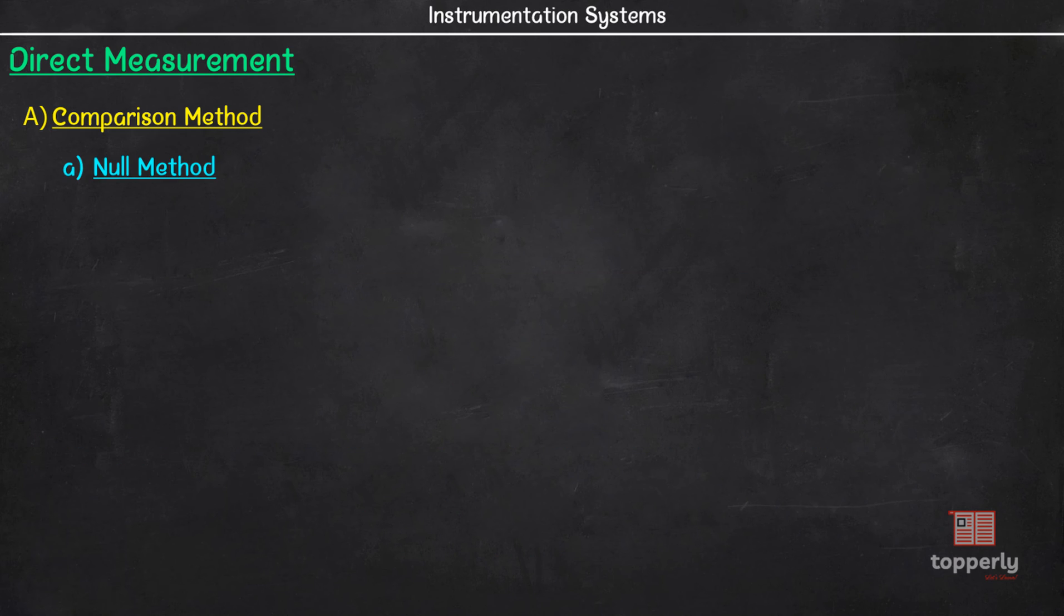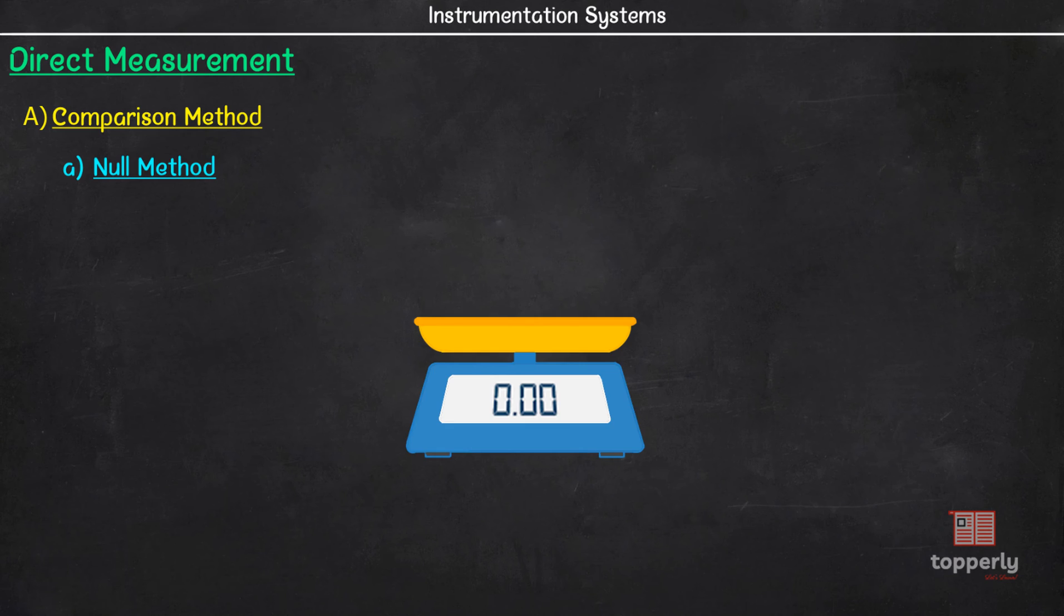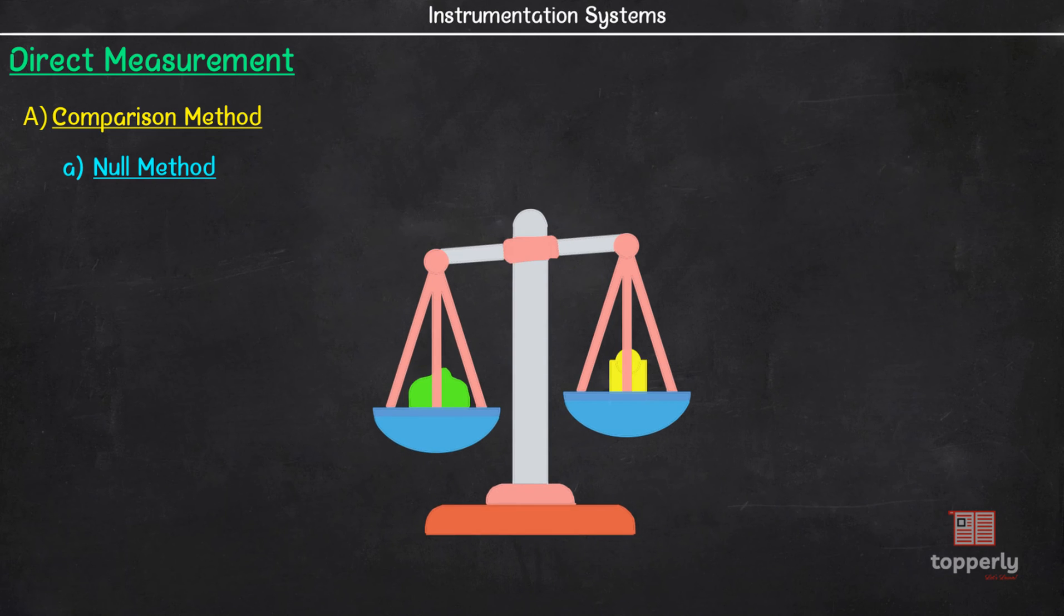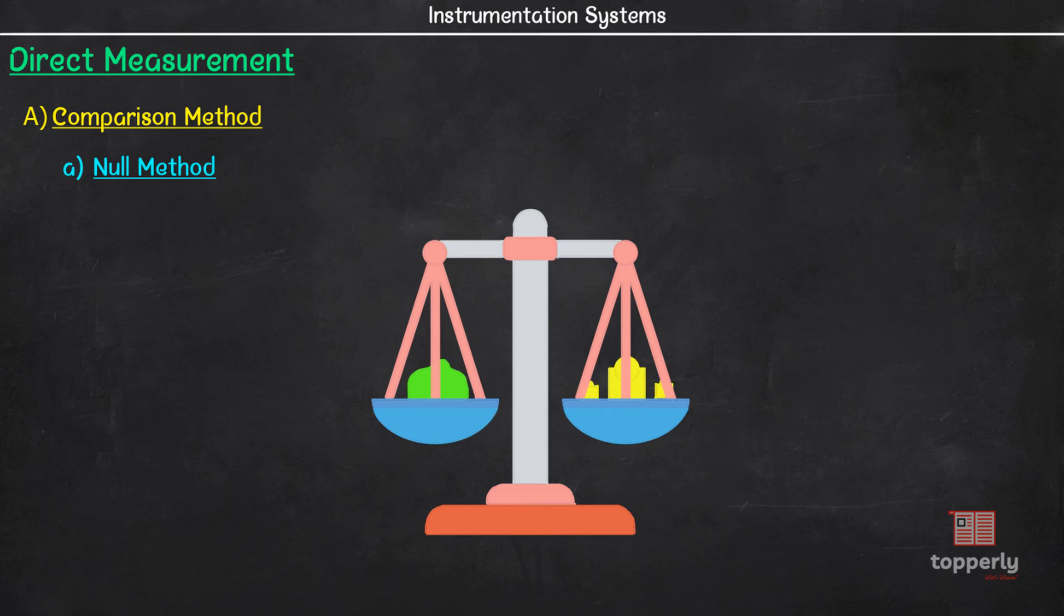An example of a null method of measurement is a weighing scale. Here, at one end we place the unknown weight and on the other end we keep on adding weights until the standard weights nullify the effect of unknown weight and thus the weight of the object is measured. So you can see that the action of the unknown quantity upon the instrument is reduced to zero by the counteraction of the known quantity of same kind.